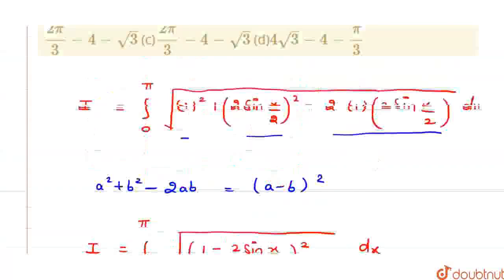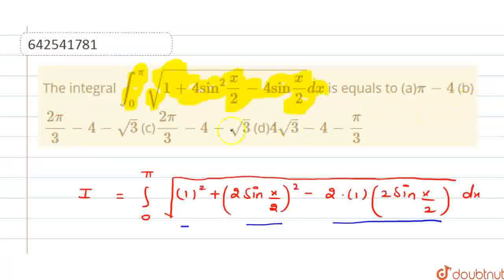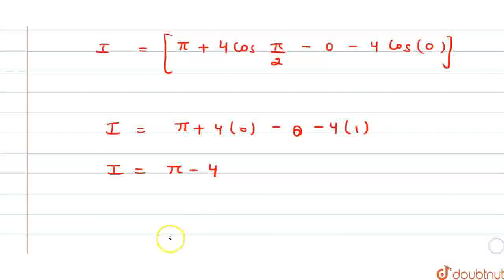Let's check the options we are provided. π - 4 is option A. So we have got that option A, which is the value of the integral π - 4, is the correct answer for this question. Thank you!